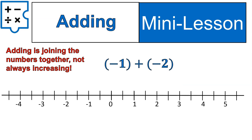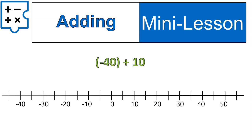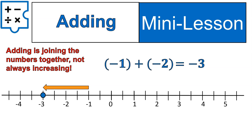When you're adding negatives, it works exactly the same way. Adding is joining them together — it is not always making things bigger. So here's what adding negative one plus negative two would look like. We start at negative one, then we add negative two, which means moving two places to the left or decreasing the value by two. That brings us to negative three. Two positives added together give you a larger positive, and two negatives added together give you a lesser value — a bigger number that is also negative.